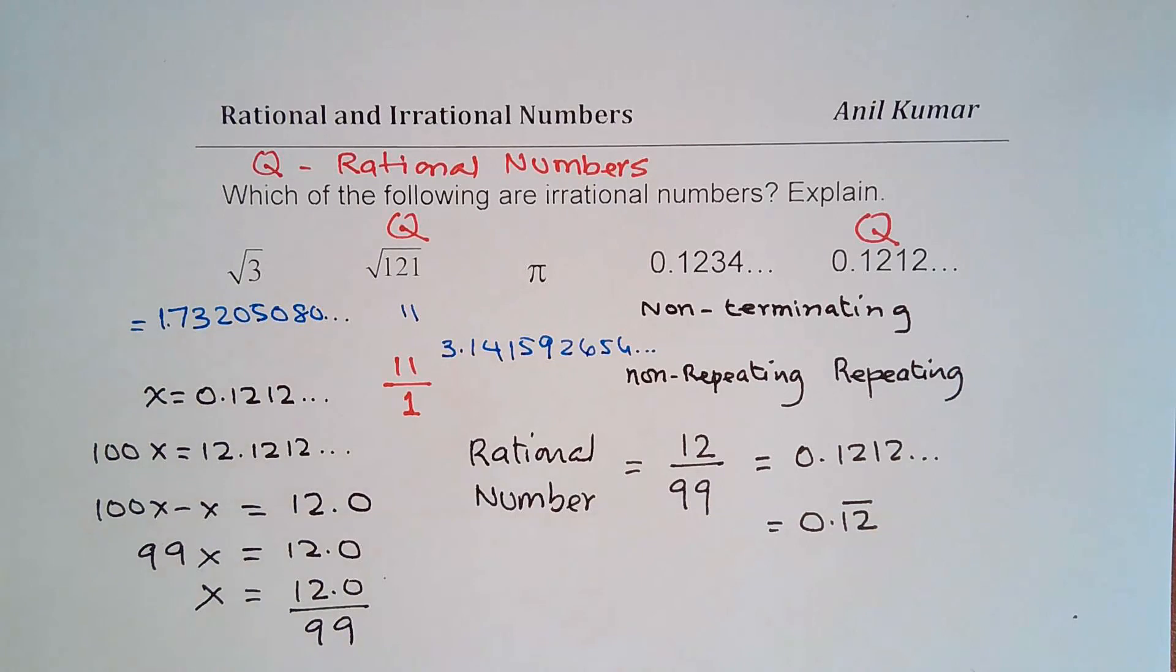So most of the square root numbers which do not have a perfect square, which are not perfect squares.